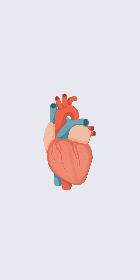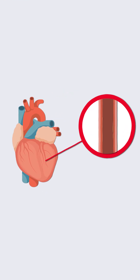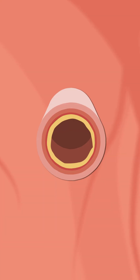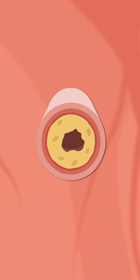Coronary heart disease is a buildup of plaque in the coronary arteries, commonly known as atherosclerosis. It's usually a buildup of cholesterol which leads to blockages in the heart arteries and ultimately heart attack and death.